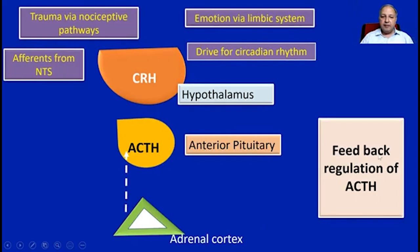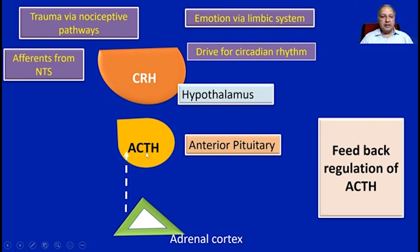Regarding feedback regulation of ACTH: multiple pathways from the nucleus tractus solitarius, nociceptive inputs, trauma, or circadian rhythm ultimately cause stimulation of the hypothalamus to release corticotropin releasing hormone, which acts on the anterior pituitary to cause the release of ACTH. ACTH then mediates its effect on the adrenal cortex, leading to release of various hormones, which then cause inhibition of ACTH release from the anterior pituitary via feedback inhibition.